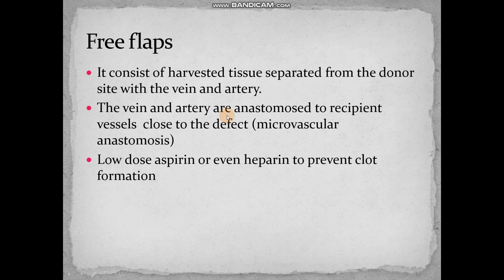For free flaps, we use harvested tissue which is separated from the donor site along with its vein and artery. After placement, the vein and artery are anastomosed to the patient's vein and artery — this procedure is termed microvascular anastomosis, which is a very difficult procedure. Low-dose aspirin as well as heparin will prevent the formation of clots so that further damage to the flap will not occur.